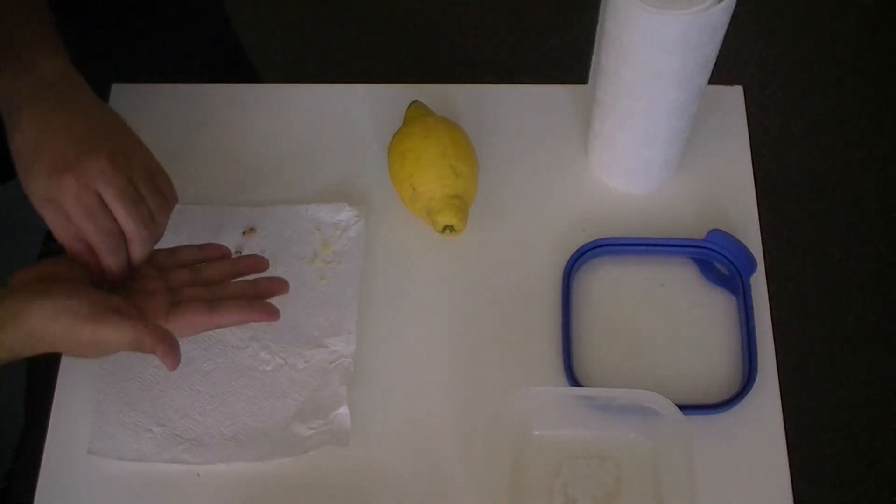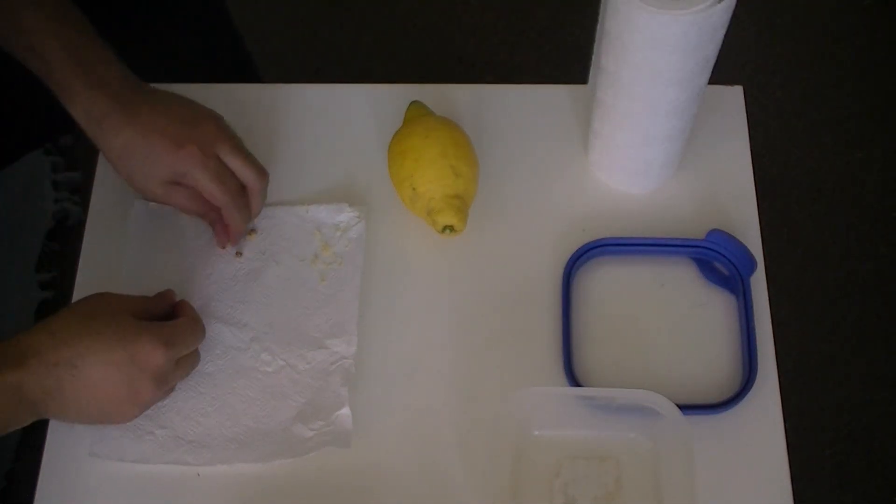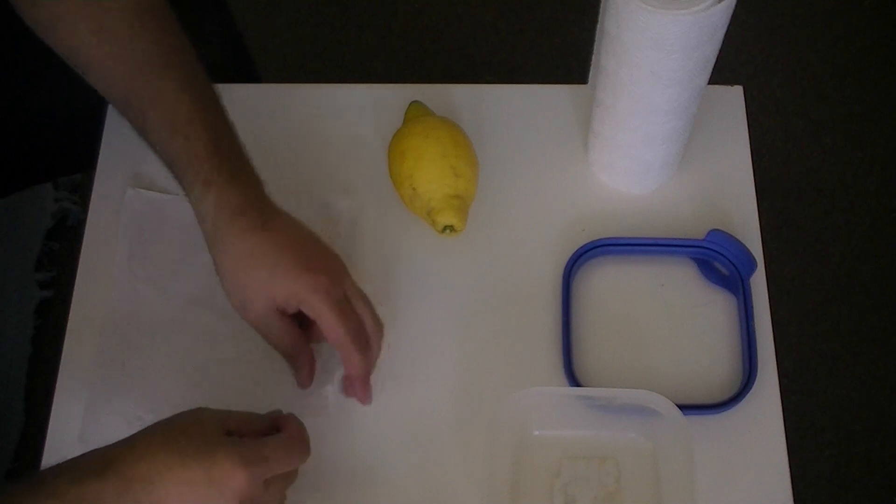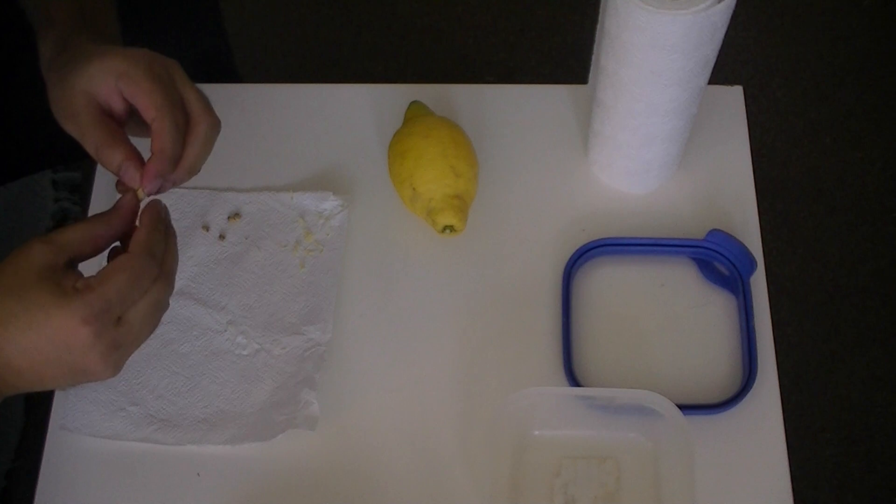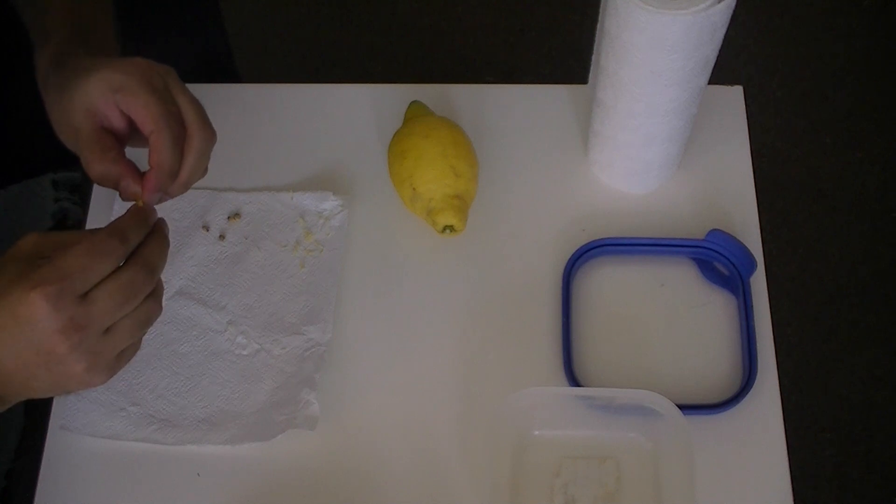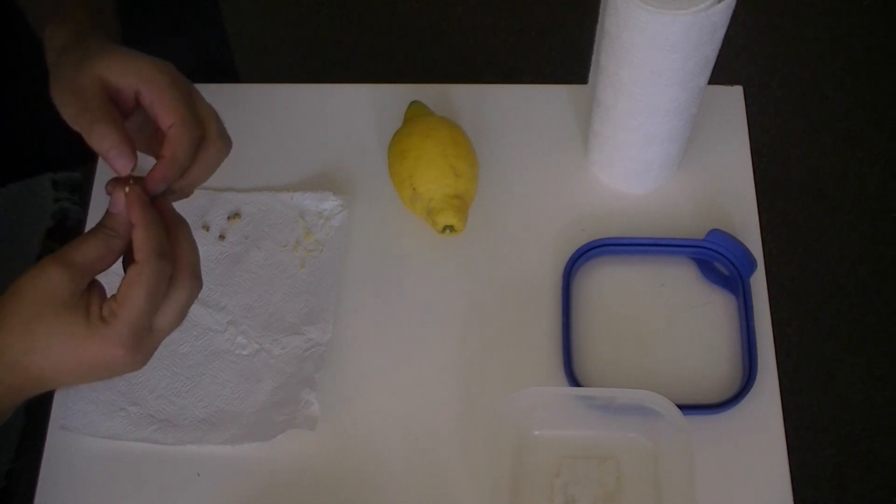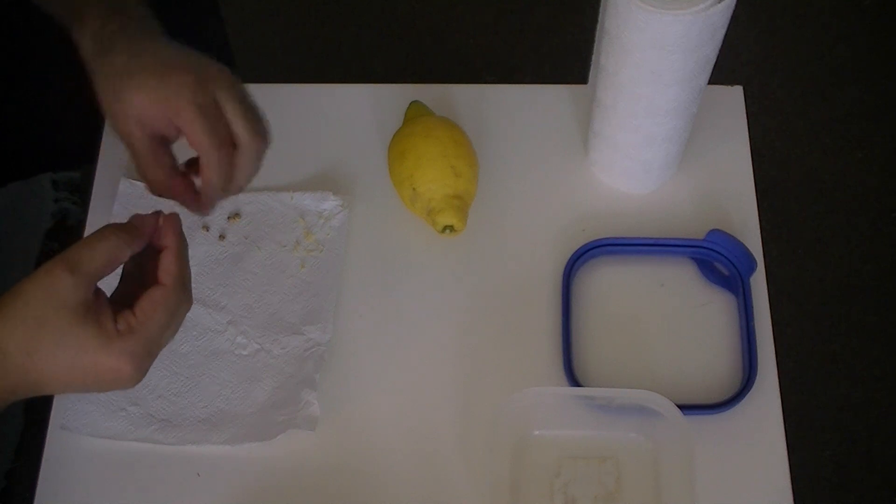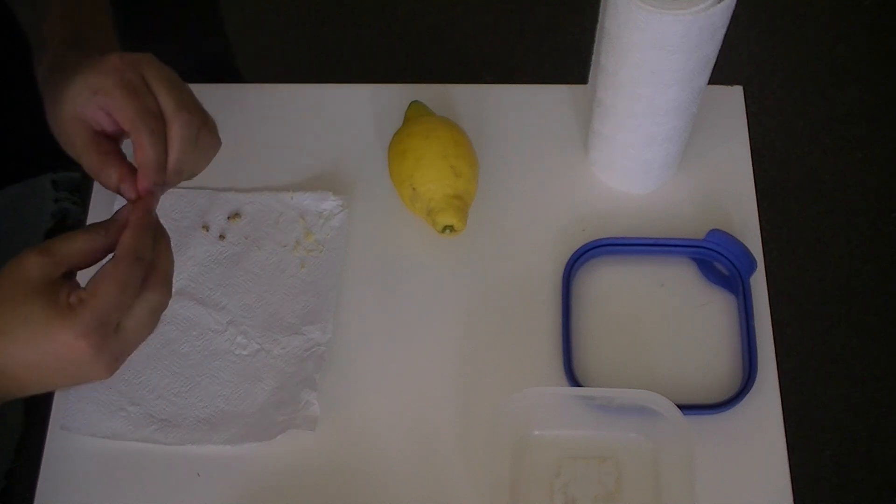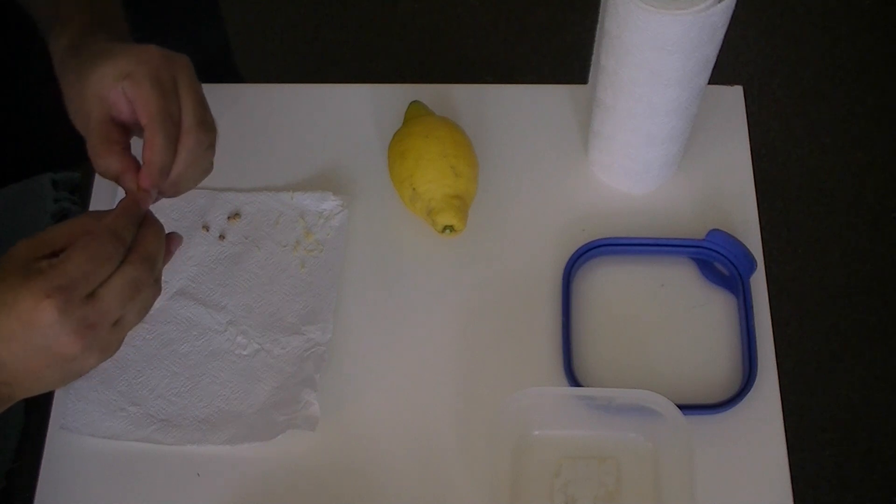When I took them out of the lemon they were very slippery. So I gave it a wipe on this piece of paper towel and using just my hands I'm peeling the hard skin off them. So the reason why I left this one was to show you how easy it is to peel the skin off one of these seeds.